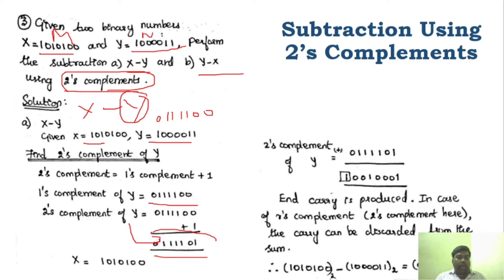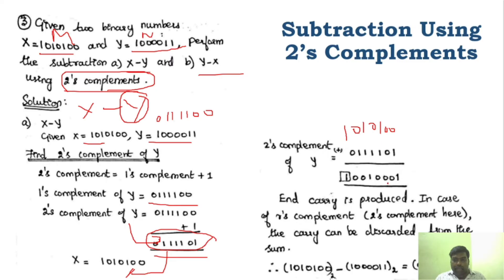Now we add the 2's complement of Y with X. The 2's complement value is combined with X's value: 1, 0, 1, 0, 1, 0, 0, 1, 0, 0. Adding these together: 0, 1, 0, and then carries propagate — 1 plus 1 gives 10, so we write 0 and carry 1, and then 1 plus 1 gives 10 again. The addition continues and produces another carry.